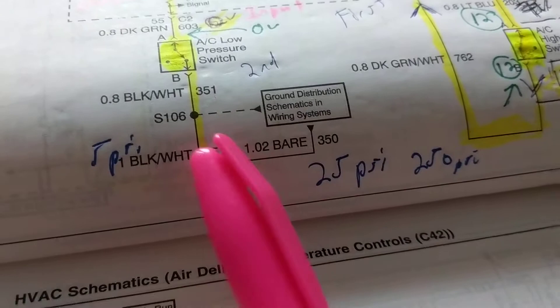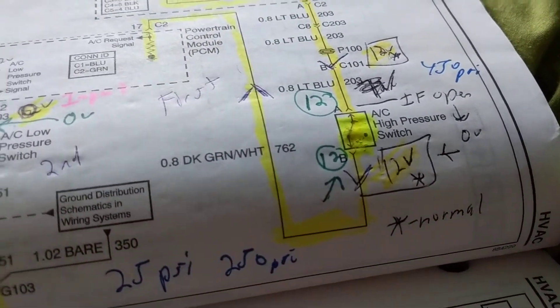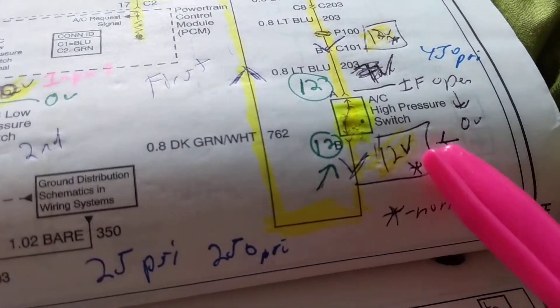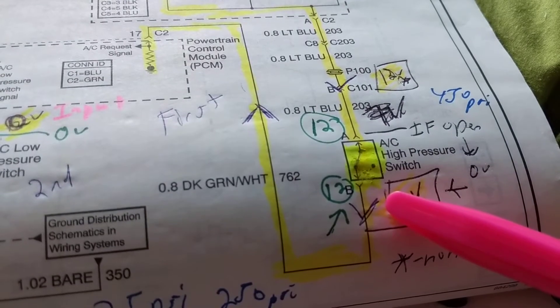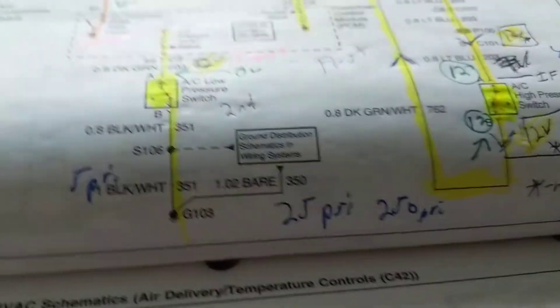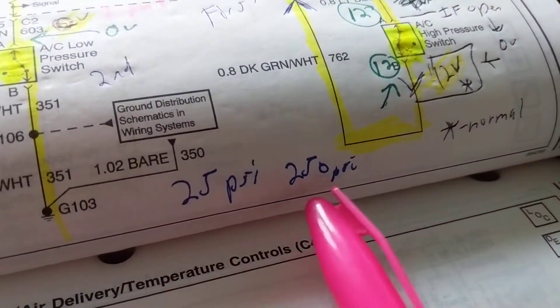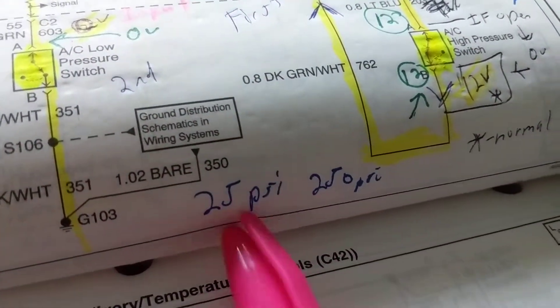That means your low pressure is too low. If this one trips, your high pressure is too high. What's high? For this vehicle's, 450 PSI will open it. It will trip, let's say. For this one, 5 PSI. Sometimes maybe 10 PSI, depending on the model. Anyway, so the normal is around 25 to 250 PSI for low and high.